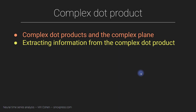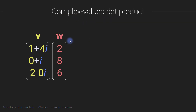In this video we are going to discuss the complex dot product. It's not so complicated — all we are going to do is compute the dot product where one or both of the vectors is complex valued. Here you see an example of two three-dimensional vectors: one is purely real valued with no imaginary parts, and the other is a complex valued vector where every element contains a real part and an imaginary part.